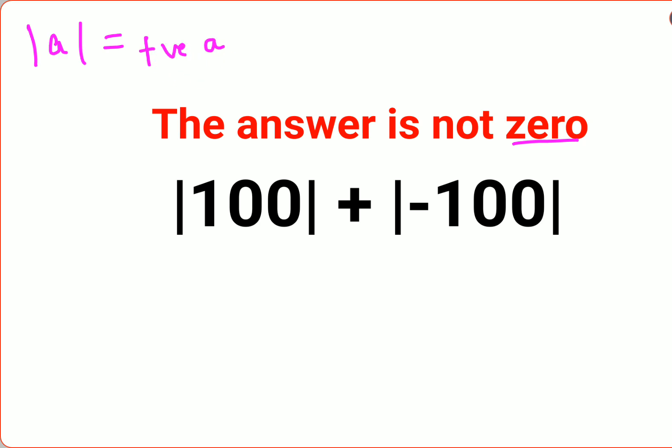Okay, so here if you had, let's say, negative 2 under two vertical bars. Now these vertical bars are called mod. So mod of negative 2 will always be positive 2.